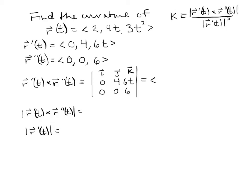For the i component, crossing off the i column: 4·6 − 0 = 24. For the j component, crossing off the j column: 0·6 − 0·6t = 0. For the k component: 0·0 − 4·0 = 0. So the cross product is (24, 0, 0), and its magnitude is 24.